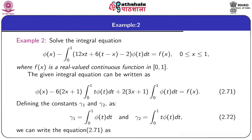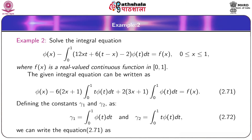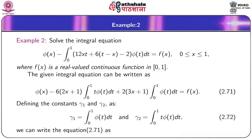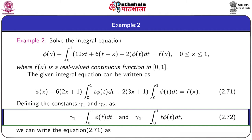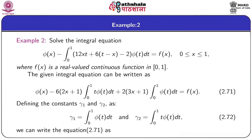Next, we consider two more examples. In example 2, we shall solve the given integral equation where f(x) is a real-valued continuous function on the interval [0,1]. We can rewrite this given integral equation in the form given by equation 2.71. In equation 2.71, we define the integral from 0 to 1 of φ(t)dt as the constant γ1, and the integral from 0 to 1 of t·φ(t)dt as the constant γ2, as given in equation 2.72.